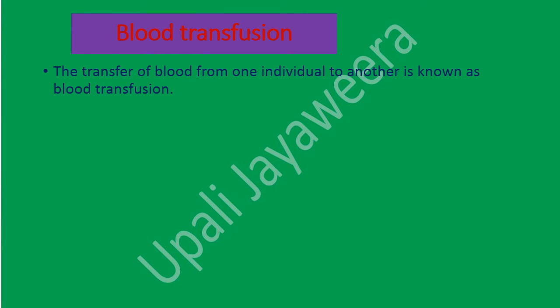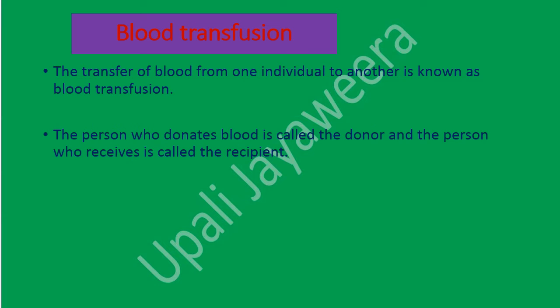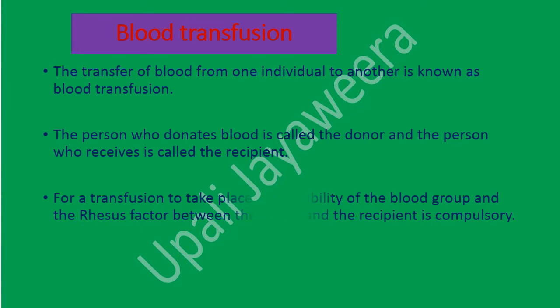Now we will discuss blood transfusion. The transport of blood from one individual to another is known as blood transfusion. The person who donates blood is called the donor and the person who receives is called the recipient. For a transfusion to take place, compatibility of the blood group and the Rhesus factor between the donor and the recipient is compulsory.